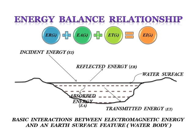Now let us look at the energy balance relationship. The basic interactions between electromagnetic energy and earth's surface features are represented through a diagrammatic method using the example of a water body. The incident energy is calculated as: reflected energy + absorbed energy + transmitted energy. The summation of these three gives you the total energy incident upon the water body — this is the energy balance relationship for any kind of material.